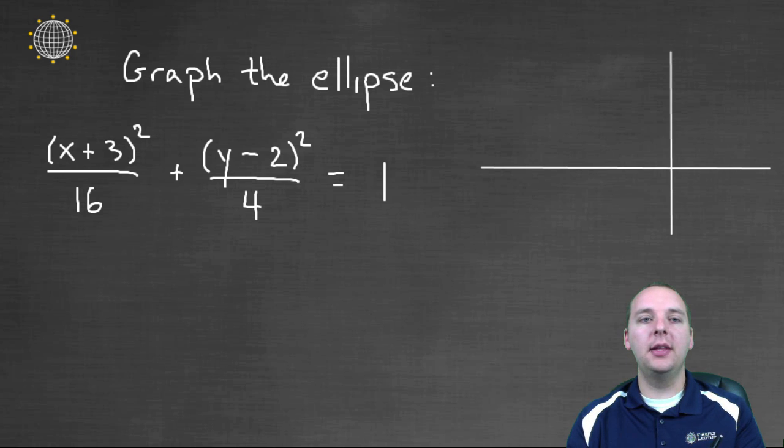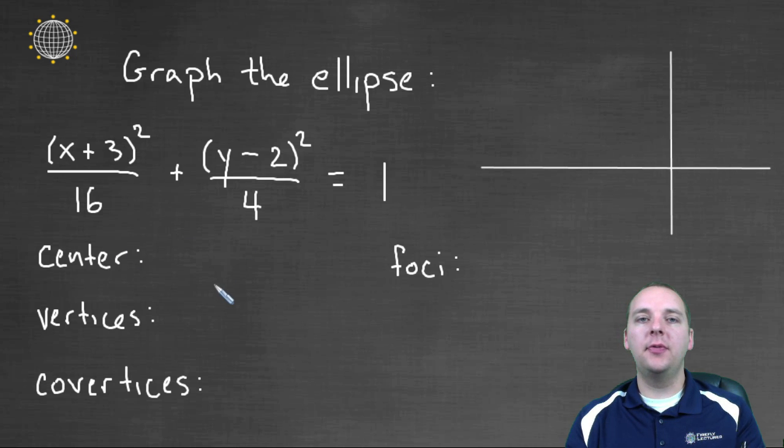In this example, we're trying to graph the ellipse (x + 3)² / 16 + (y - 2)² / 4 = 1. So right off the bat, we can start to find some important information about this ellipse.